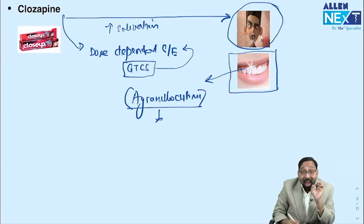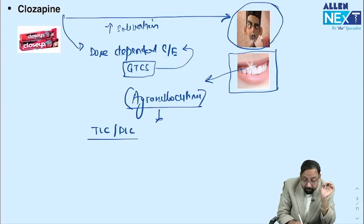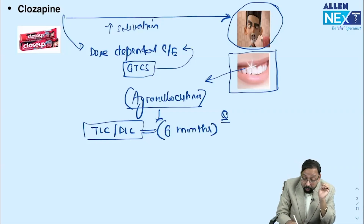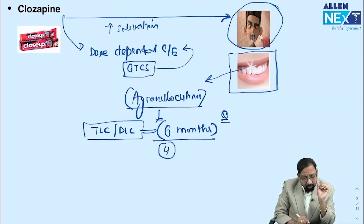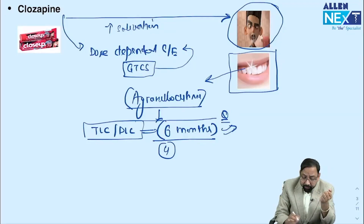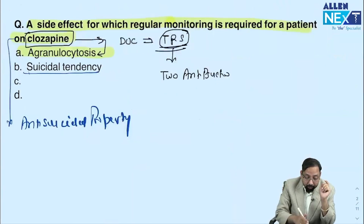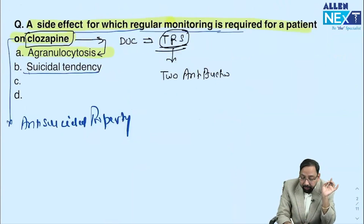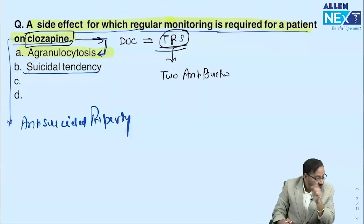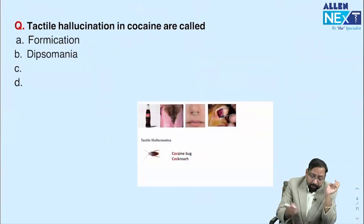Monitoring is done with a DLC (differential leukocyte count) every week. This monitoring must be done every week for six months. This question has been asked previously — in most sources it is given as four months, but the latest edition of Synopsis gives six months. The AIIMS exam specifically asked that DLC should be monitored at least every week for six months. The answer to the side effect question requiring regular monitoring is agranulocytosis.